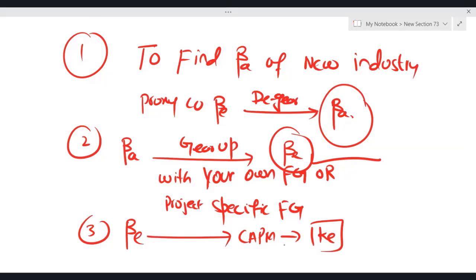Step one, to find beta asset of the new industry, take the proxy company beta equity, de-gear it, get beta asset. Once you have found the beta asset, gear up with your own financial gearing or project specific gearing if it is given to you.